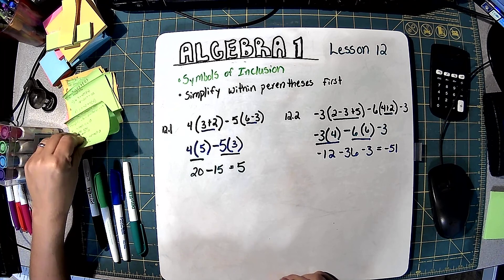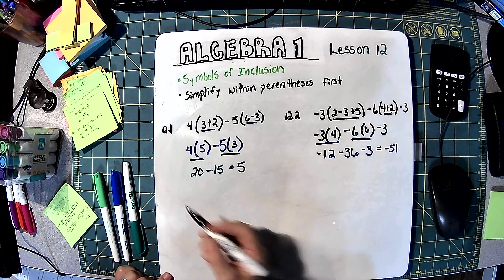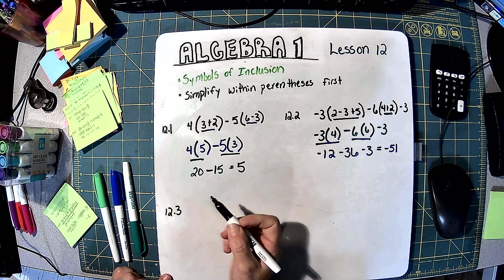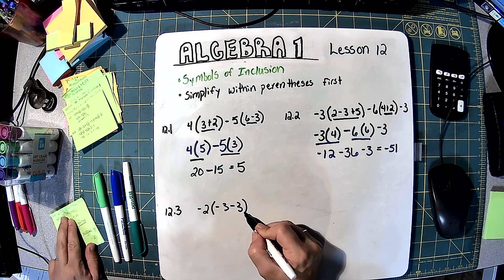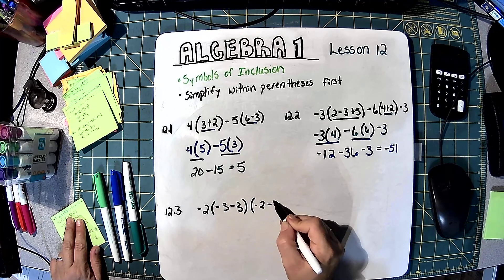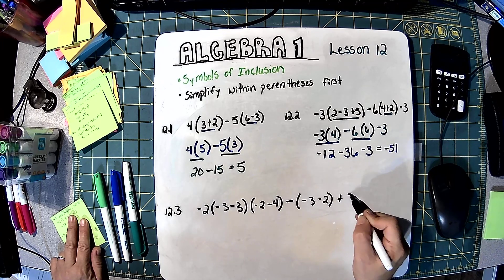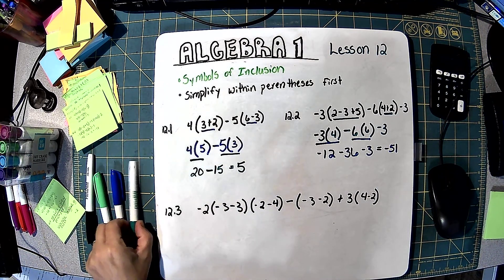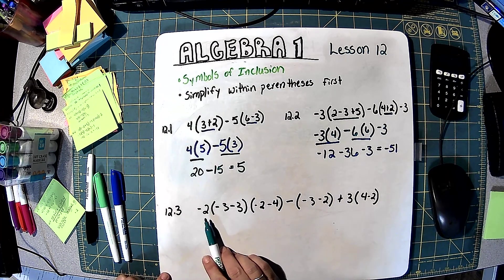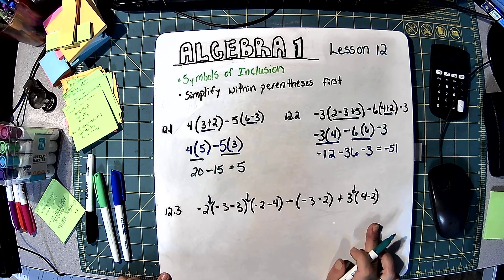12.3 is the same thing, but this one is a little more complicated because it's longer. It has negative 2 times (negative 3 minus 3) times (negative 2 minus 4) minus (negative 3 minus 2) plus 3 times (4 minus 2). We have to be careful about where we're adding and subtracting and where we're multiplying. There's no sign in between certain numbers — there's going to be 3 multiplications in this.